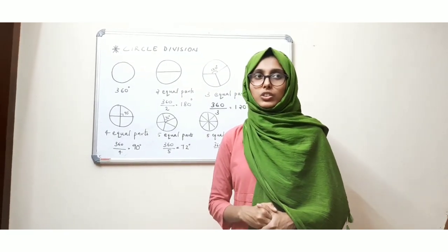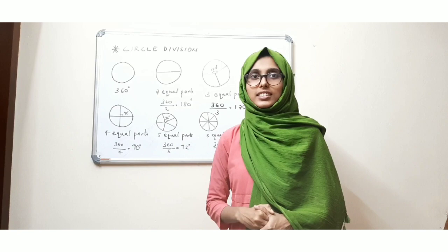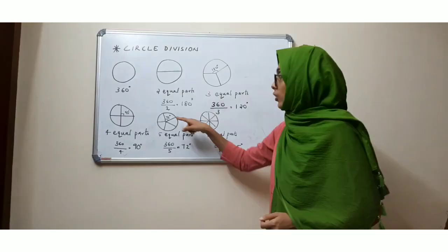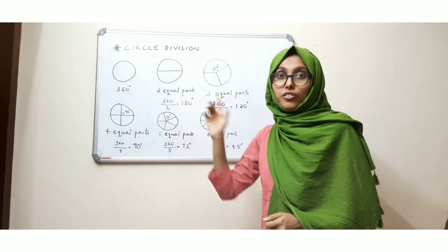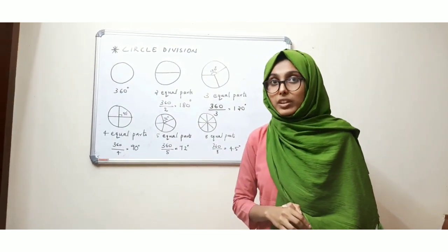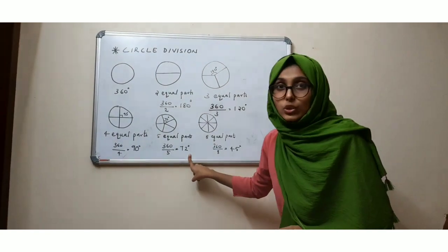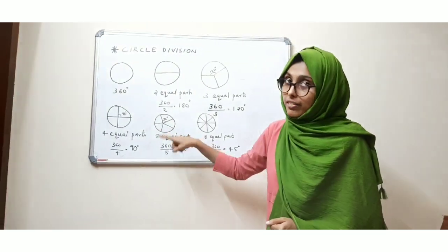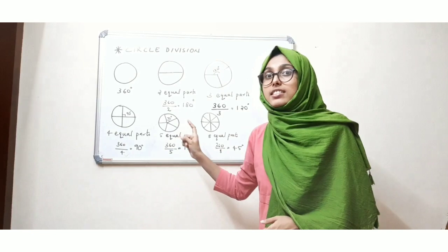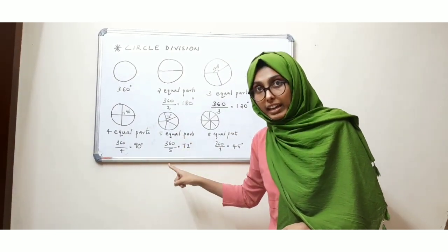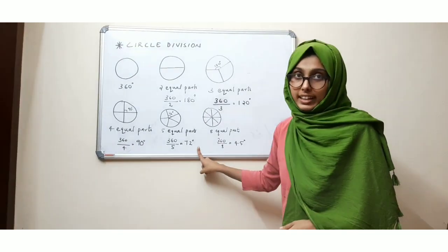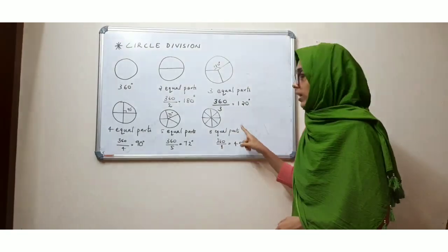So now we are going to divide the circle into five equal parts. So one part will be of 72 degrees — how? One full circle is of 360 degrees. 360 divided by 5 equals 72 degrees.